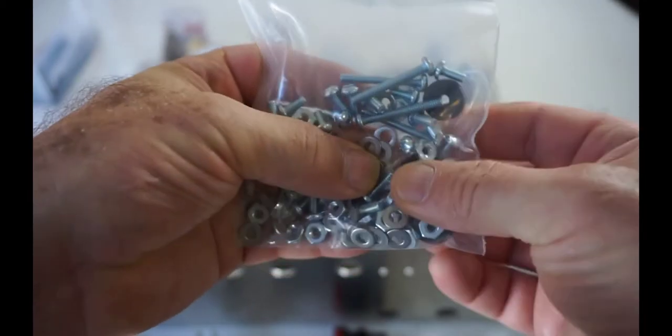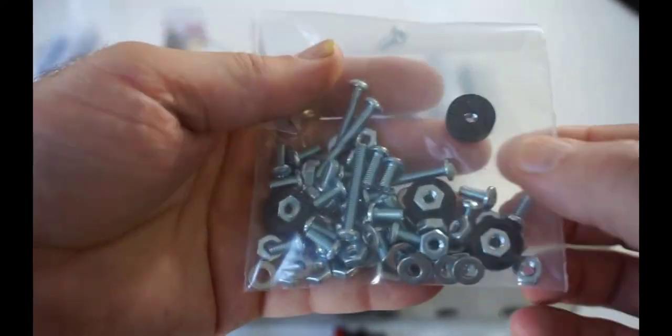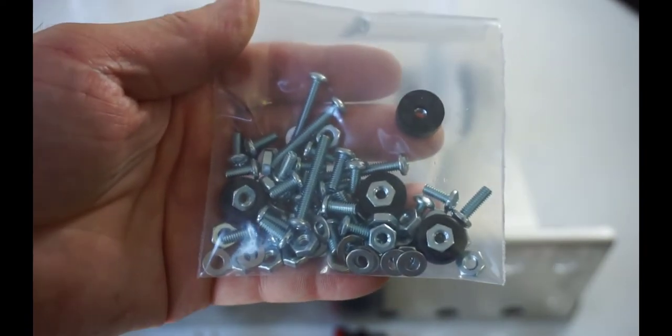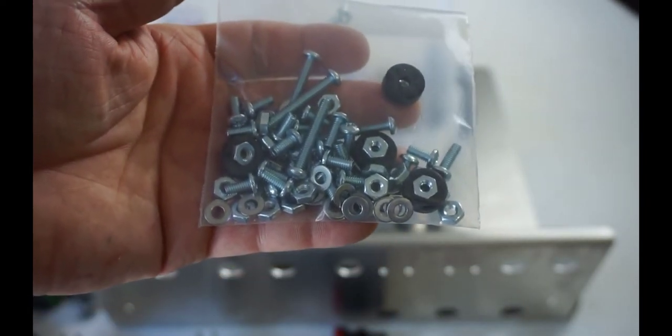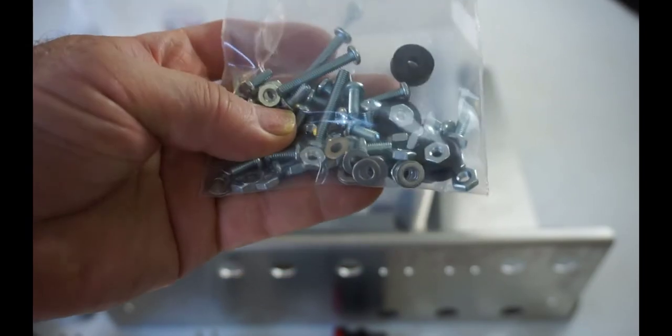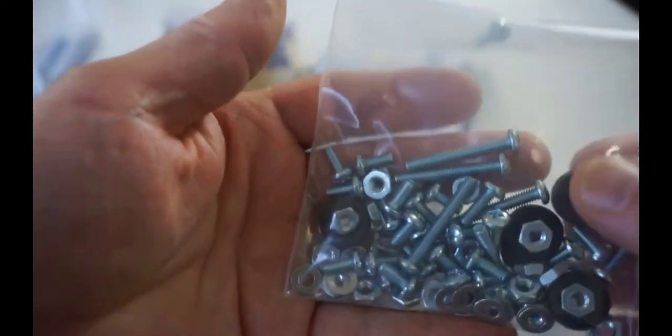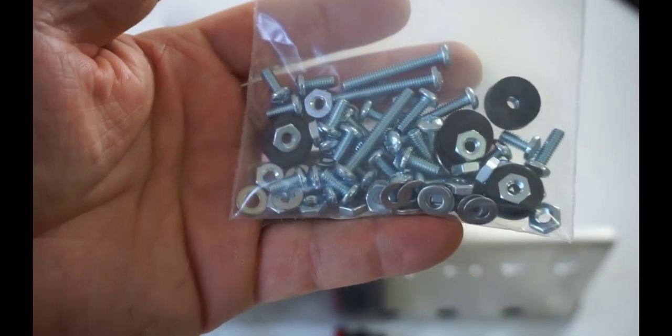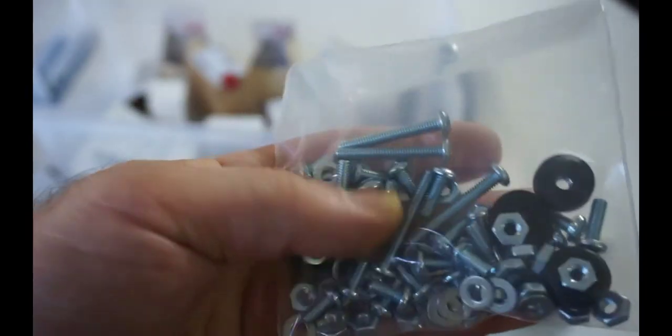You should find a baggie with all your nuts and bolts and screws. These little black round things are the feet for the bottom of your chassis so you don't scratch up your mom's dining room table or your wife's dining room table and be in the dog house. When you're putting it together, put the feet on it first.